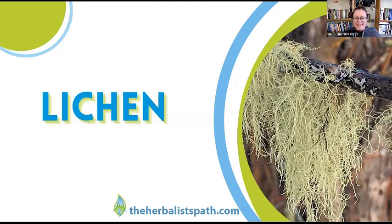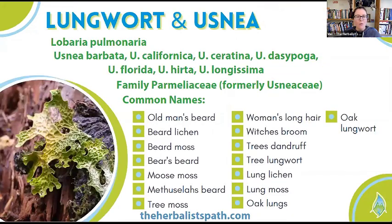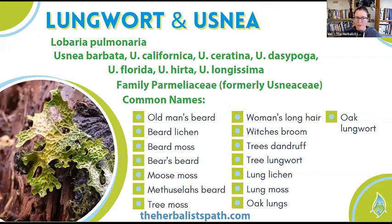Today, the primary lichen we are going to talk about are lungwort and usnea. So we'll definitely dive deeper into each of these and what they mean for you. Lungwort is a really cool lichen that looks a lot like lung tissue. Its name is Lobaria pulmonaria. And when we hear that pulmonaria, we know that we're talking lungs — pulmonary arteries, that's all lung work right there.